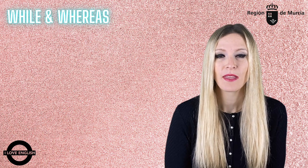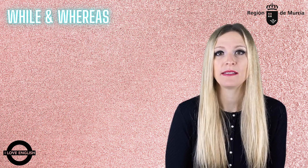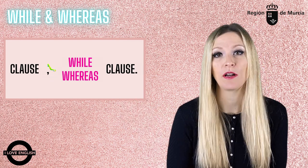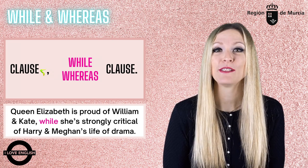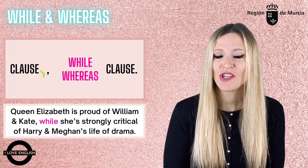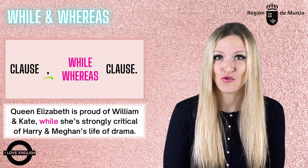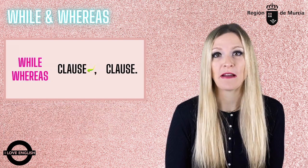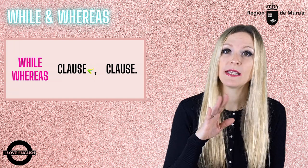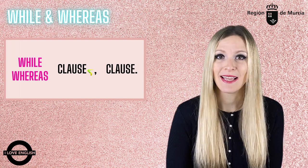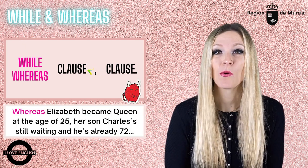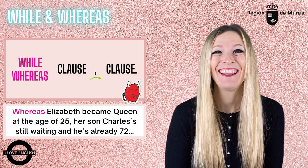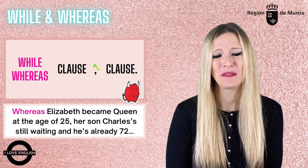While and whereas. While and whereas can both be used after a clause followed by a comma and then another clause. Queen Elizabeth is proud of William and Kate, whereas she's strongly critical of Harry and Meghan's life of drama — Elizabeth's not a drama queen, that's for sure. While and whereas can also be found at the beginning of a sentence, followed by a clause, a comma, and then a second clause. For example: whereas Elizabeth became queen at the age of 25, her son Charles is still sitting and waiting, and he's already 72. Poor devil.